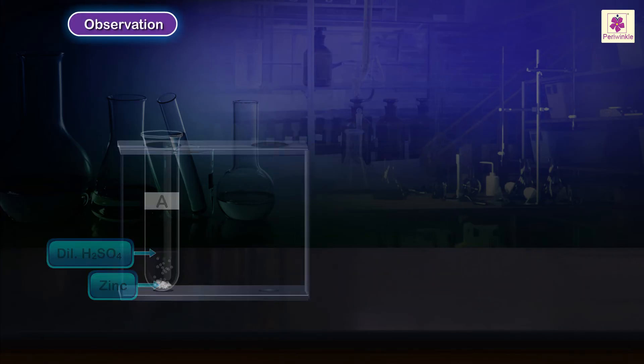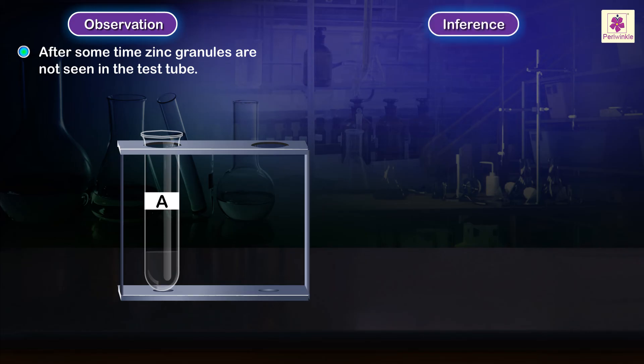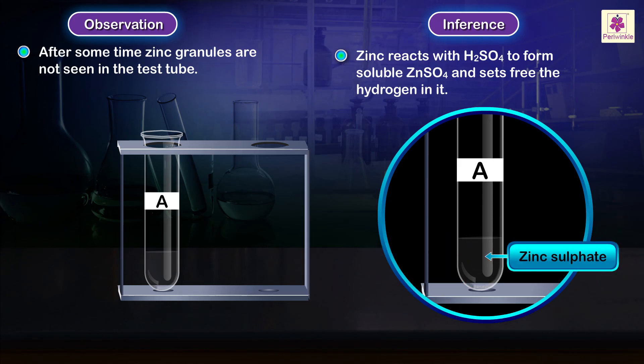Observation: After some time zinc granules are not seen in the test tube. Inference: Zinc reacts with sulfuric acid to form soluble zinc sulfate and sets free the hydrogen in it.